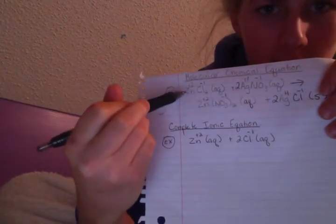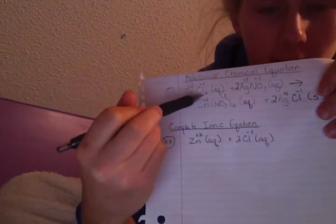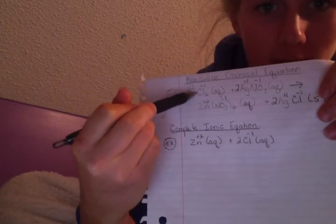You're supposed to show charges with these — you didn't have to in the molecular equation. So first, it's going to be Zn plus 2 aqueous plus 2Cl negative 1 aqueous. That is for the very first compound. And if you have a 2 as a subscript, you always put it as the coefficient for the element.